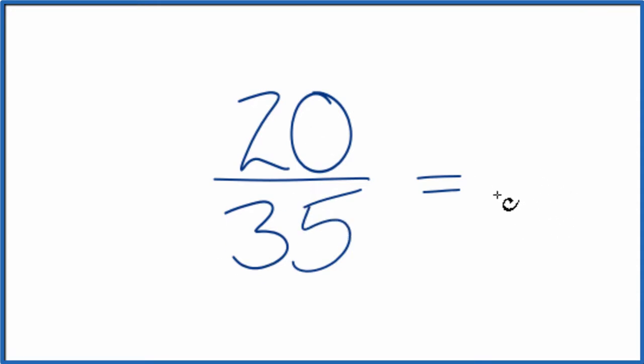To do that, we need to find a factor that's common to 20 and 35. We're looking for the greatest common factor. So I know that I can divide 5 into 20 and 35.